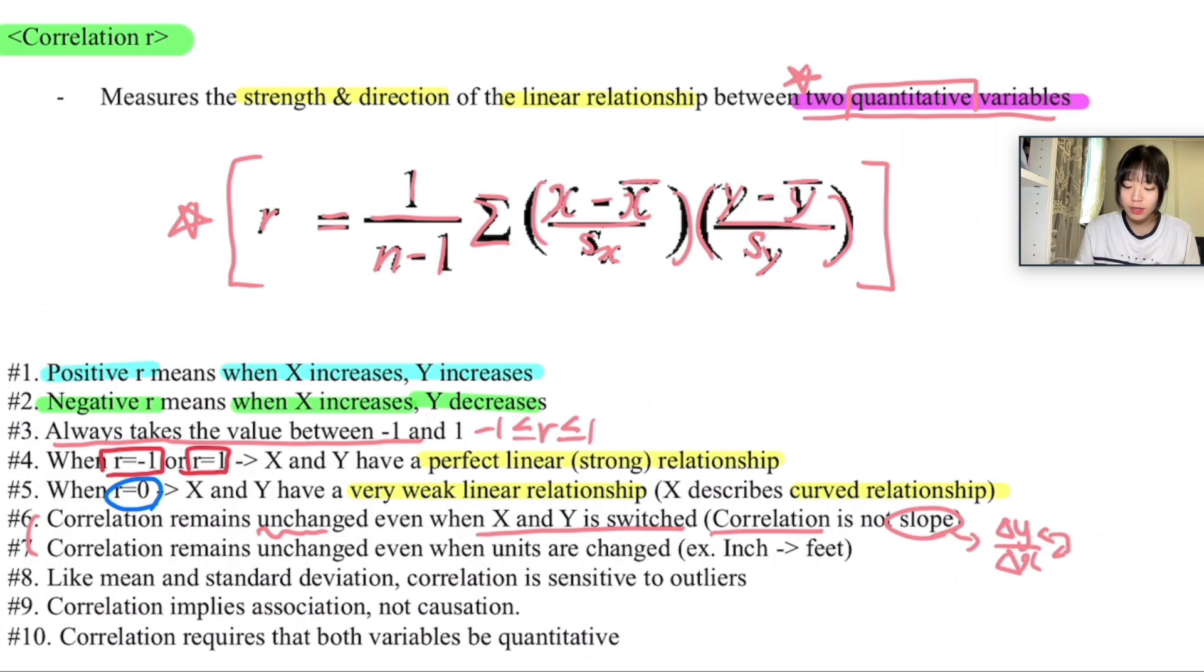And also correlation remains unchanged even when the units are changed. What I mean by this is that, for example, when the question says like change the value of inches into feet, it's not going to affect the correlation because the formula for calculating the correlation coefficient standardizes the variables, so you're going to use the z-scores. Therefore, changes in scale or units of measurement will not affect the value itself, and these two are really important.